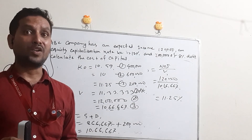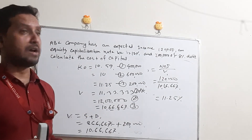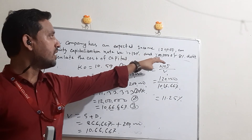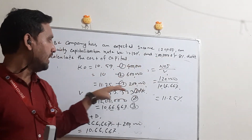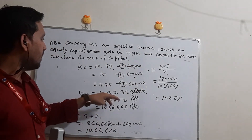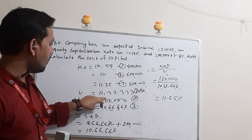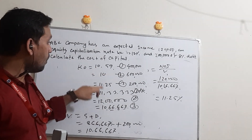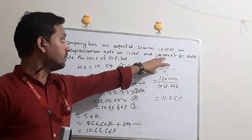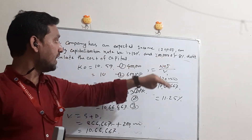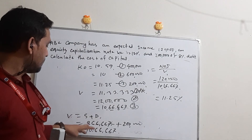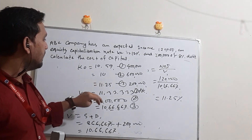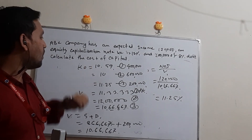According to the NI approach, if we increase leverage, the value of the firm increases and the cost of capital decreases. And if we decrease leverage, then the value of the firm decreases and the cost of capital increases. This confirms that capital structure decisions are relevant to firm valuation under the NI approach.